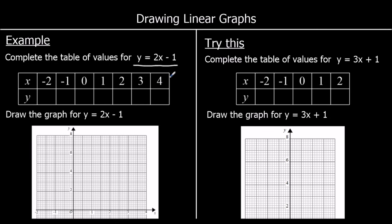So we're going to start by substituting in x equals 4 into our equation. So y is going to be equal to 2x take away 1. When x is 4, we've got 2 fours take away 1. 2 fours are 8, 8 take away 1 is 7. Now I'm going to use x equals 3. 2 threes are 6, take away 1 is 5.